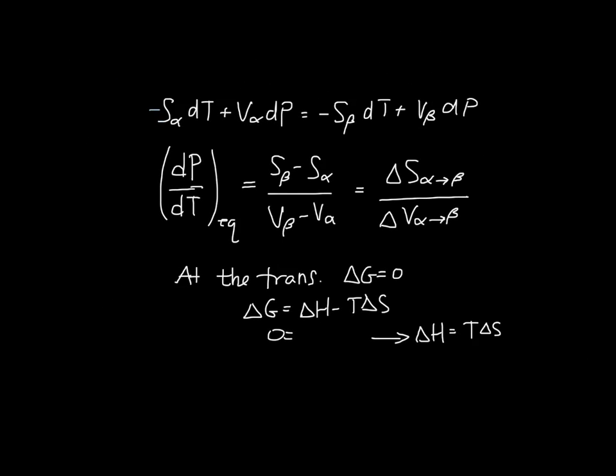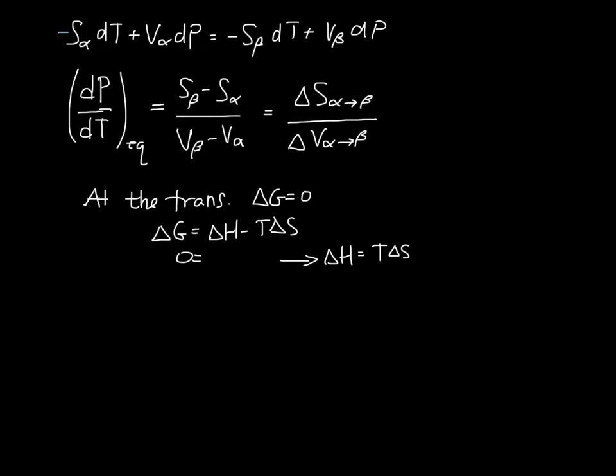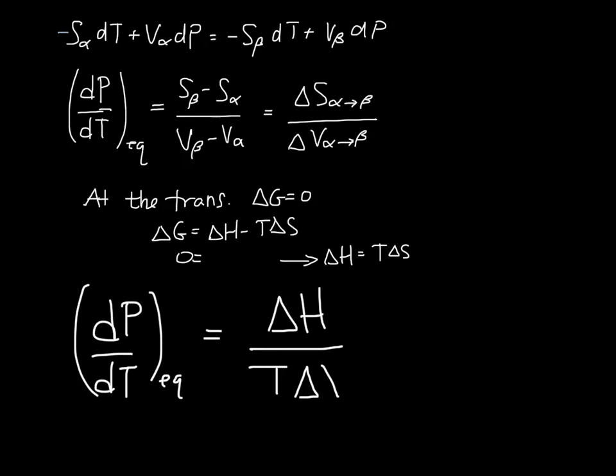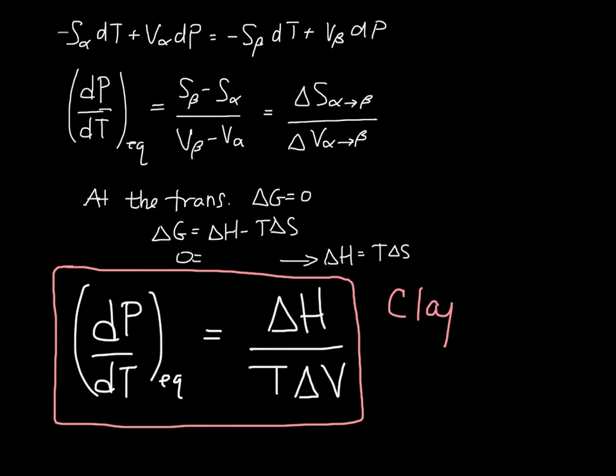And so we end up with an expression which looks like this: dP dT at equilibrium is delta H divided by T delta V. This equation here is usually known as the Clapeyron equation.